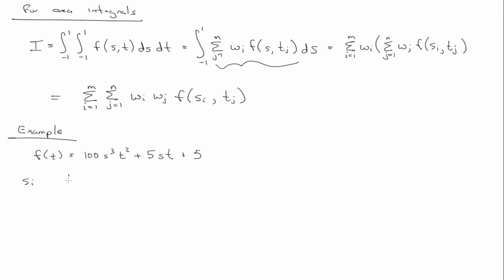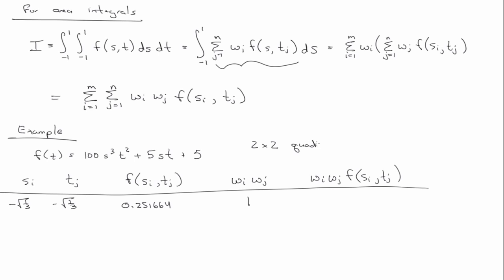And so, an example here would be if F of S, T is equal to 100 S cubed T squared plus 5 S T plus 5. So, we have s_i, t_j, F(s_i, t_j), w_i, w_j, and F times w_i times w_j. So, I think instead of writing in decimals, I'll just write minus square root one-third, plus square root one-third. So, here you get 0.251664. W_I, W_J is one. By the way, we're using two-by-two quadrature. So, two points in each direction. Two-by-two quadrature. Quadrature is just a fancy word for integration.